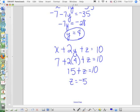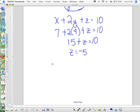So, in your final answer, x was 7, y was 4, z was negative 5.